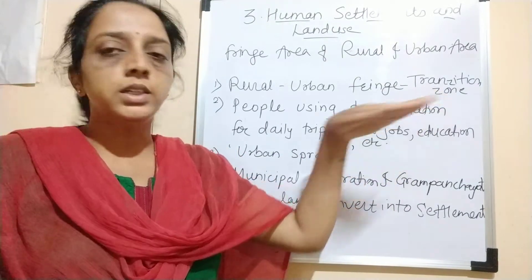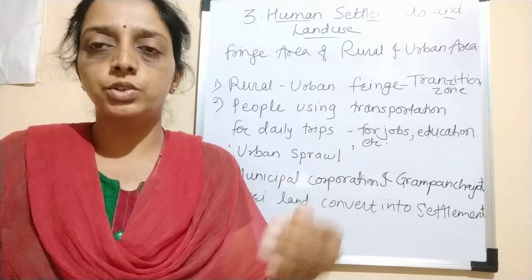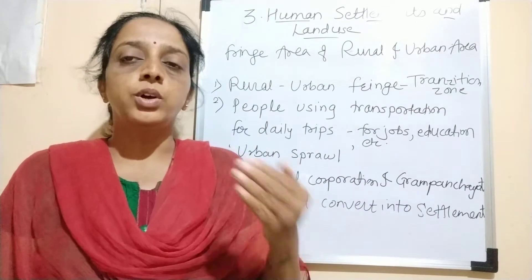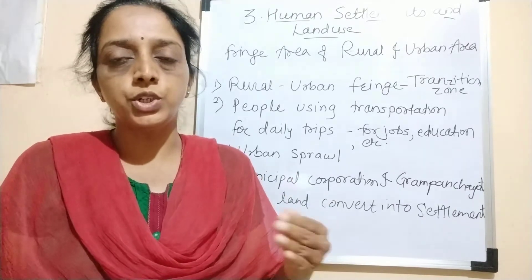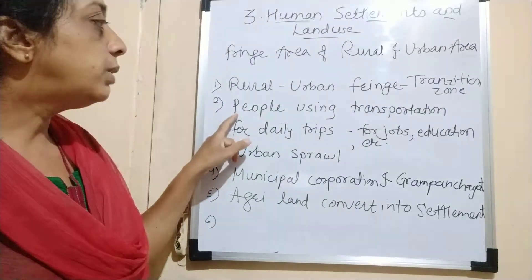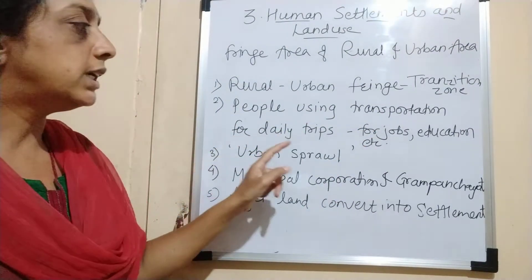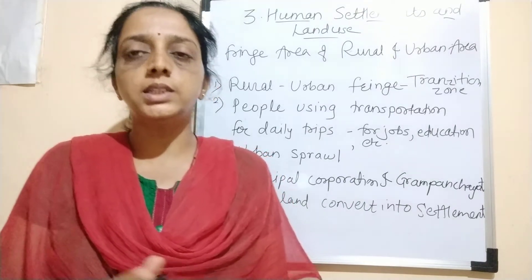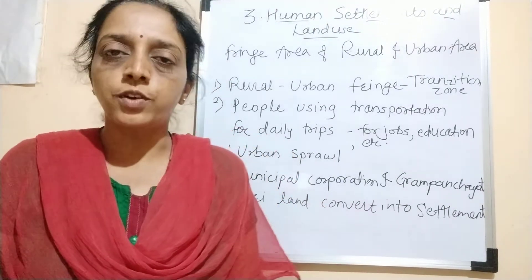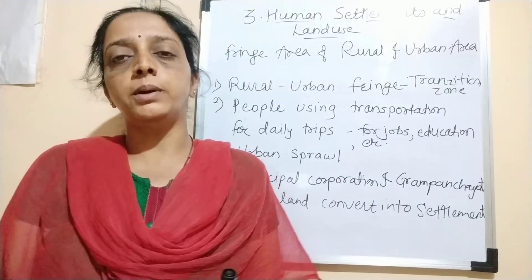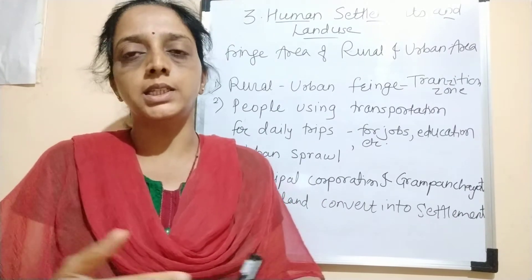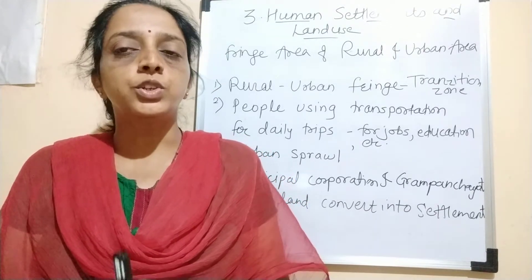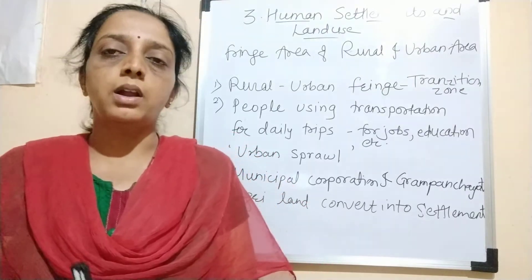So we call it a transition zone — from an undeveloped or rural region into a developed or urban region. People are using transportation for daily trips. People are living in these regions because the prices of houses are less. Those who cannot afford high prices are choosing fringe areas for shelter.